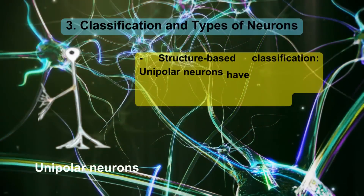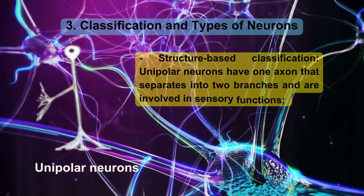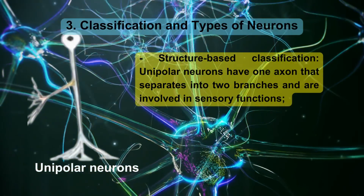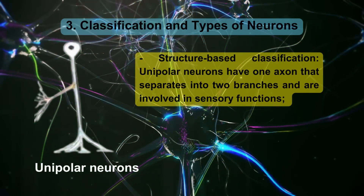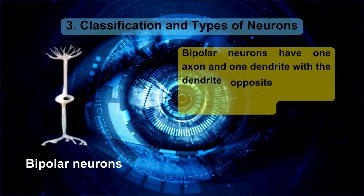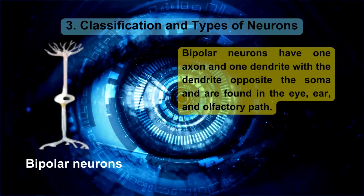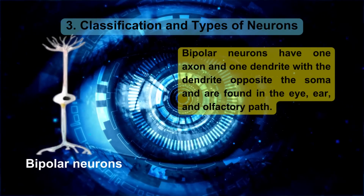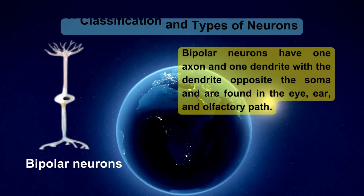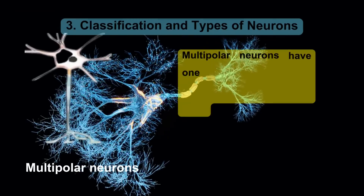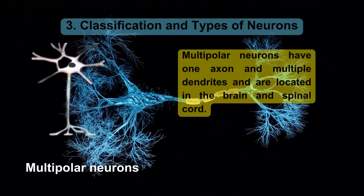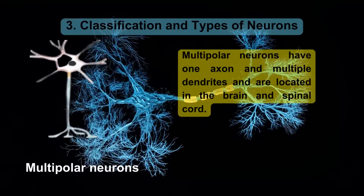Structure-based classification: Unipolar neurons have one axon that separates into two branches and are involved in sensory functions. Bipolar neurons have one axon and one dendrite, with the dendrite opposite the soma, and are found in the eye, ear, and olfactory path. Multipolar neurons have one axon and multiple dendrites and are located in the brain and spinal cord.